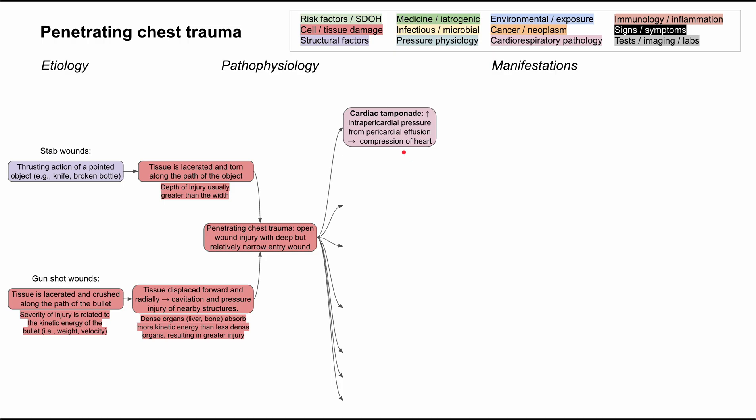First on this list is cardiac tamponade — increased intrapericardial pressure from a very acute pericardial effusion. The heart sits in a sac, and if you bleed into that sac, you're going to compress the heart. You'll have so much blood inside the pericardium that the heart is no longer able to expand and contract normally. In penetrating chest trauma, the sac fills with blood, causing cardiac tamponade.